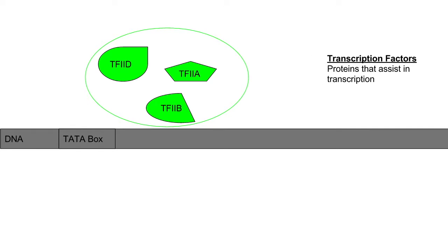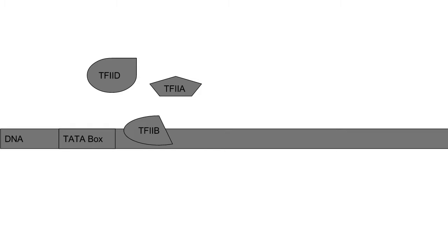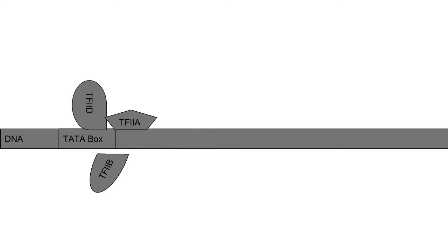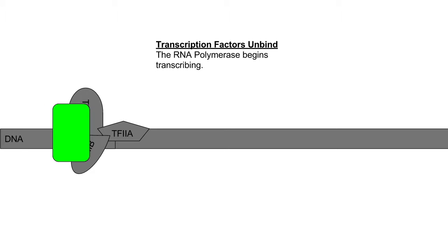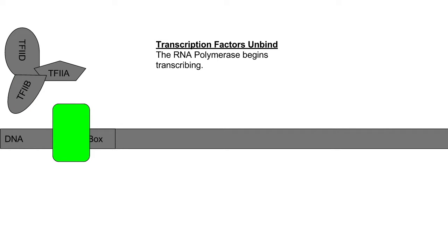A transcription factor is any protein that assists in the process of transcription, except for RNA polymerase. The transcription factors TF2D, TF2A, and TF2B bind to the TATA box. RNA polymerase then binds to the transcription factors. RNA polymerase unwinds DNA and finds complementary RNA nucleotides to correspond with the existing DNA nucleotides, then rewinds the DNA. Transcription factors unbind, and gene transcription begins.